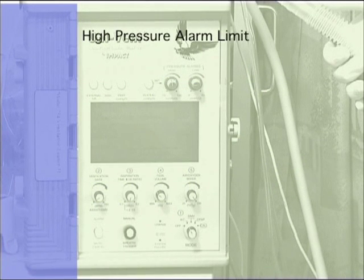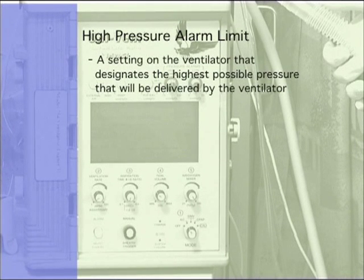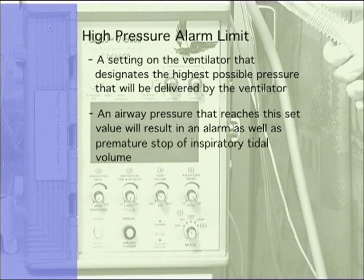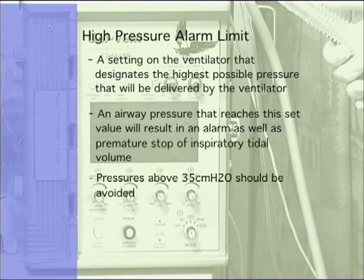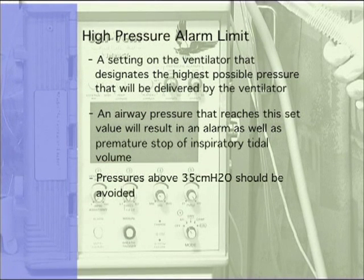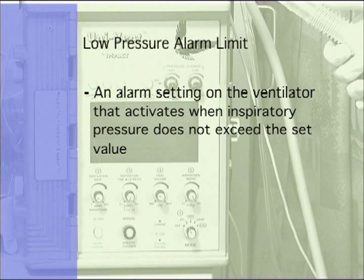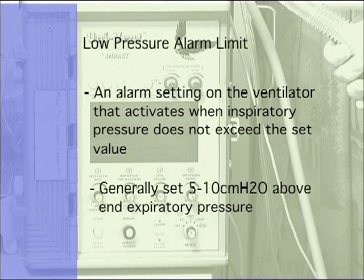High pressure alarm limit. The high pressure alarm limit is a setting on the ventilator that designates the highest possible pressure that will be delivered. An airway pressure that reaches this set value will result in an alarm as well as premature stop of inspiratory tidal volume. This setting acts as a safety mechanism to prevent patients from experiencing airway pressures that are too high. Airway pressures above 35 centimeters of water should be avoided; however, intermittent breaths with higher pressures can be acceptable as long as it resolves in a short period of time. In general, the high pressure setting should be set 10 to 15 centimeters of water above the average monitored peak airway pressure. The low pressure alarm limit activates when inspiratory pressure does not exceed the set value, generally set 5 to 10 centimeters of water above end expiratory pressure. In most cases, activation of this alarm is a result of disconnected circuitry and prompt action may be required.